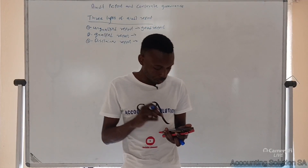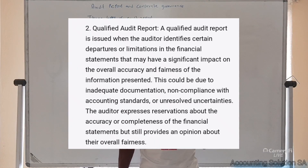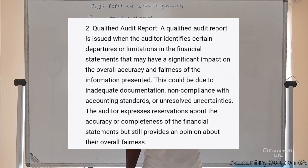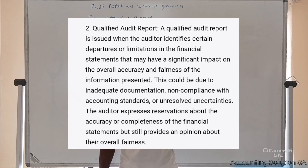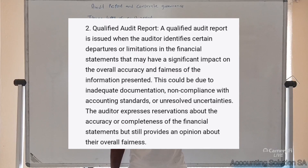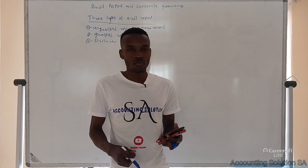Now let's go to number two, the qualified audit report. A qualified audit report is issued when the auditor identifies a certain limitation in the financial statements that may have a significant impact on the overall accuracy and fairness of the information presented. This could be due to inadequate documentation, non-compliance with accounting standards, and unresolved uncertainties. The auditor expresses a reservation about the accuracy or completeness of financial statements but still provides an opinion about their overall fairness.